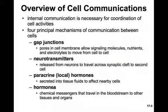Neurotransmitters, which we've explored in our chapters on neurobiology, are released from neurons and travel across the synaptic cleft to a second cell. Then there are paracrines, or local hormones. These hormones are secreted into the tissue fluids and affect nearby cells, so they don't even go into circulation. And then there are hormones — chemical messengers that travel in the bloodstream to other tissues and organs throughout the body.